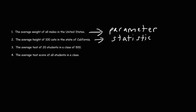Number three: the average test score of 20 students in a class of 500. The population would be the 500 — that's everyone in the class — but our study involves only 20 out of the 500, so we're taking a small sample from the population. This would be a statistic. Number four: the average test score of all students in the class. That is the entire population of everyone in the class, so the average test score would be a parameter.